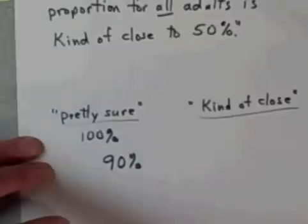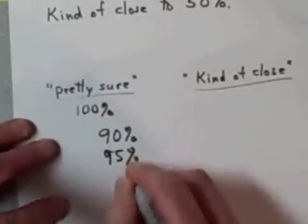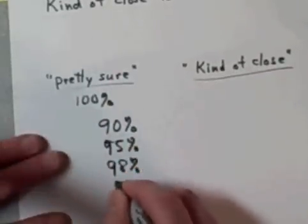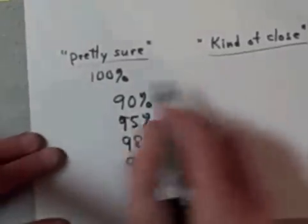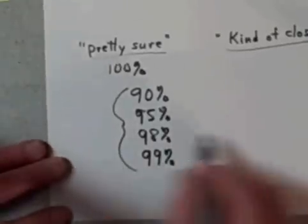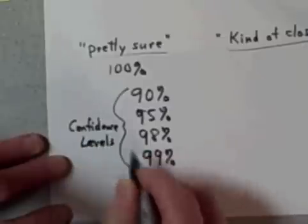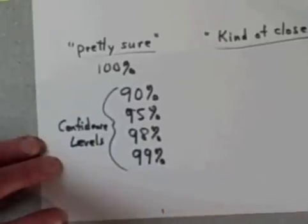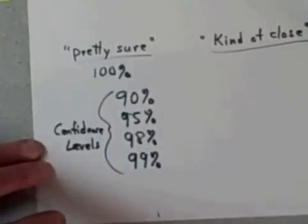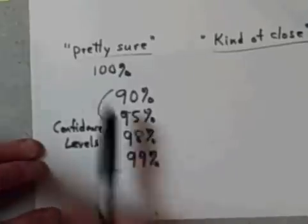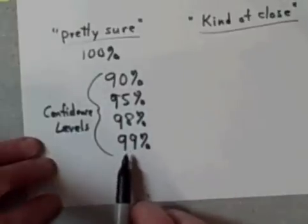Normally we make a statement about being ninety percent sure, or ninety-five percent sure, sometimes ninety-eight percent sure, or sometimes ninety-nine percent sure of our answer. These percents have names — they are called confidence levels. These are the typical confidence levels used in statistics. Any confidence less than ninety percent is considered not strong enough to even make a statement, and we know it's ridiculous to make a statement at a hundred percent because you'd have to include everything.